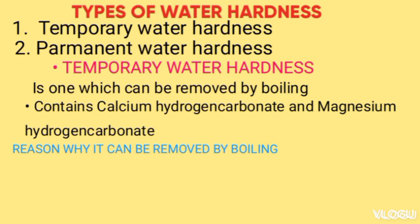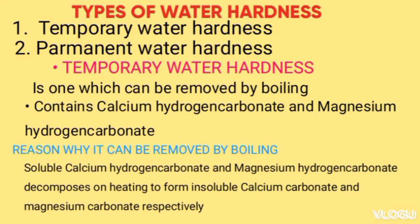The reason why temporary hardness can be removed by boiling is because the soluble calcium hydrogen carbonate and magnesium hydrogen carbonate decompose on heating to form insoluble calcium carbonate and magnesium carbonate respectively.